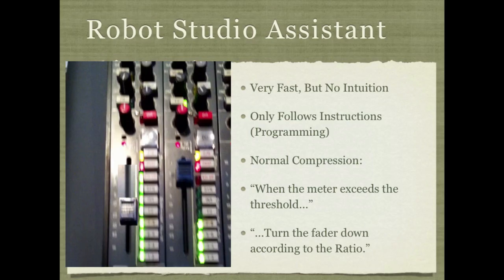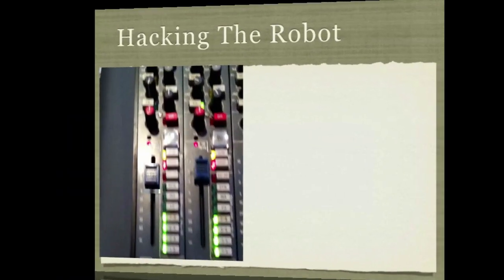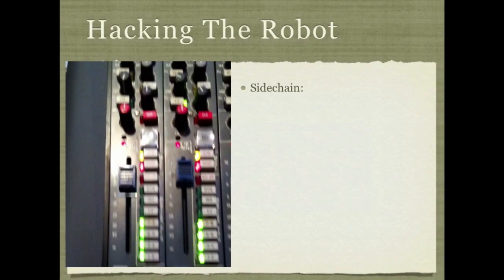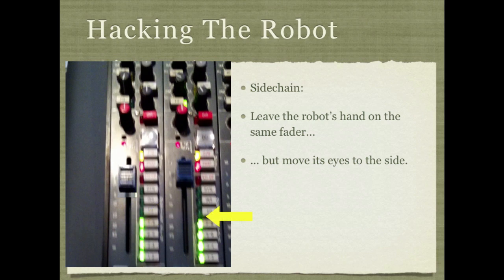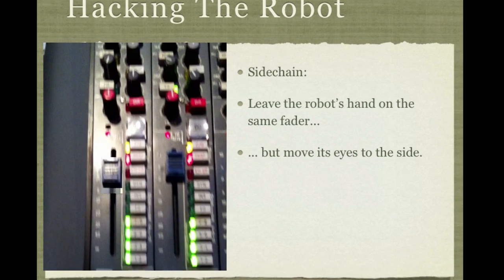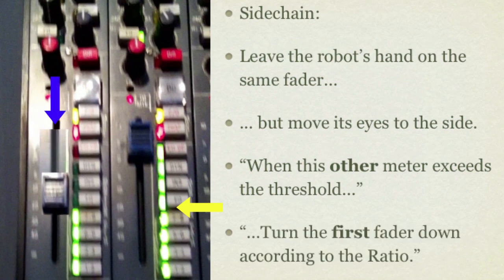That's normal compression. Using a sidechain is like hacking into the robot. You break out your screwdriver and pliers, and you leave the robot's hand on the same fader where it was before, but you go into the head and move the eyes just a little bit over to the side. So now whenever this other meter exceeds the threshold, it turns down the first fader.